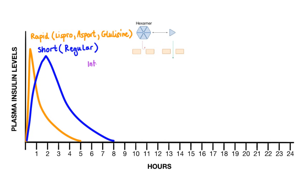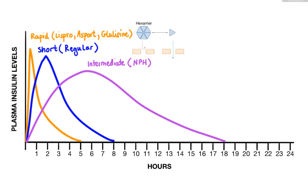Next we have intermediate acting insulin. The preparation in this category is NPH insulin, also known as isophane insulin. Unlike rapid acting insulins, NPH insulin has a slower onset of action, producing peak effect around the 6-hour mark and lasting about 18 hours. These longer lasting effects are accomplished by addition of zinc and protamine to regular insulin, resulting in a complex that is less soluble, with delayed absorption and longer duration of action.